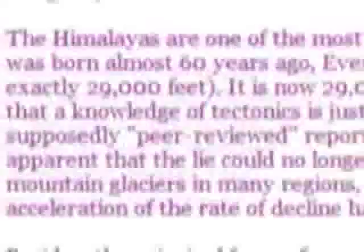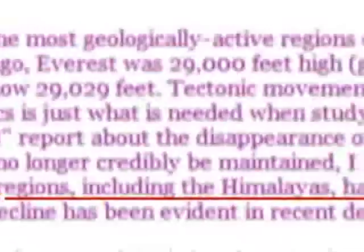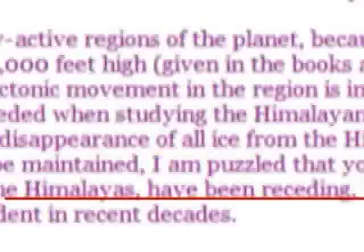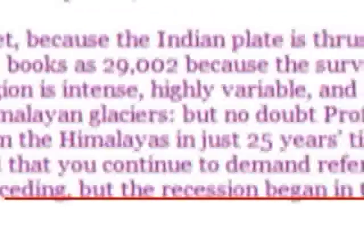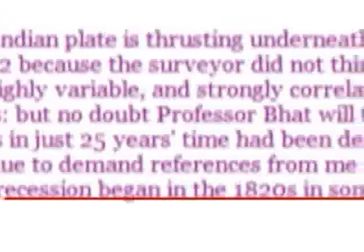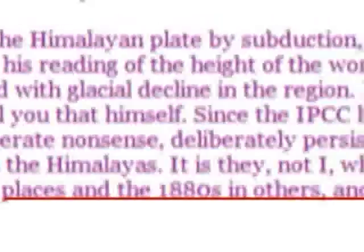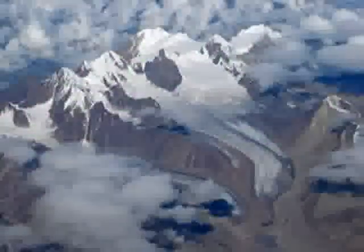Buried at the bottom of Monckton's long email was the admission: 'Yes, mountain glaciers in many regions including the Himalayas have been receding.' So now we know why the narrator kept asking for sources. In the absence of any, Monckton finally had to acknowledge the facts — and when pressed for a source, he said the glaciers had been retreating since the 1820s, again with no source. The narrator notes that when politicians evade questions, it typically means they're hiding something.